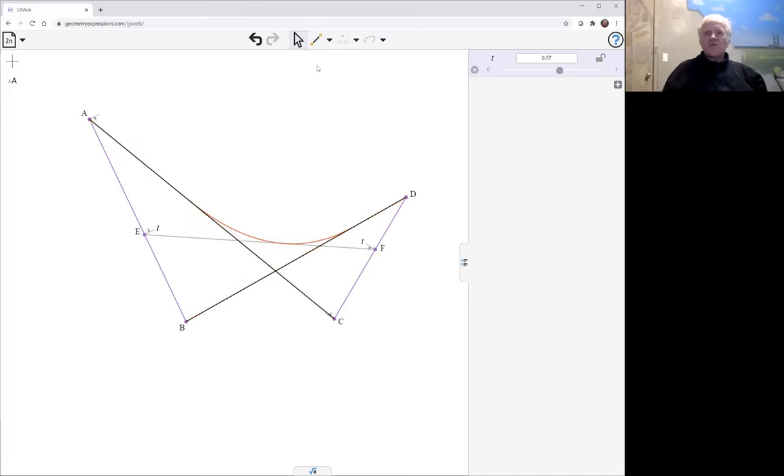So those are the tangents at the extremities of that curve. So the lines would be lying somewhere in there, the two lines we're going to use to construct this piece of parabola. And the key point being this intersection of those two tangents.